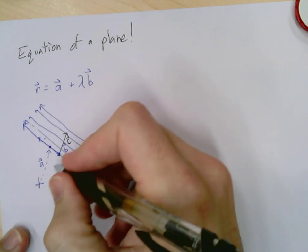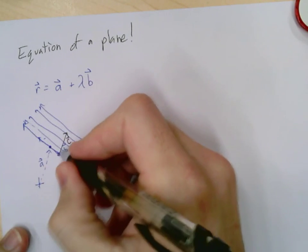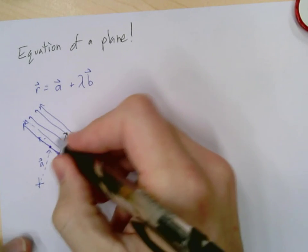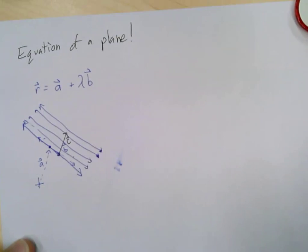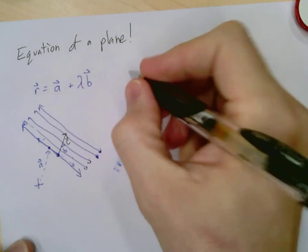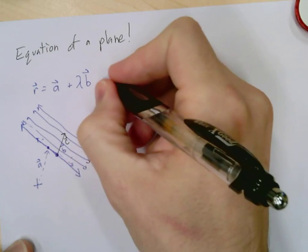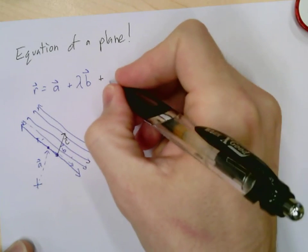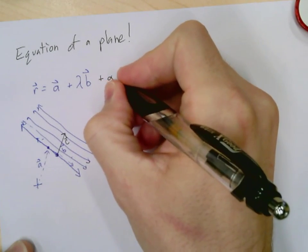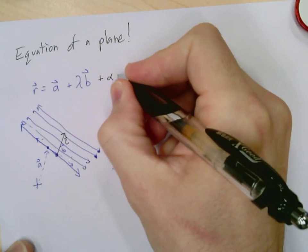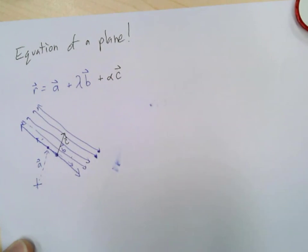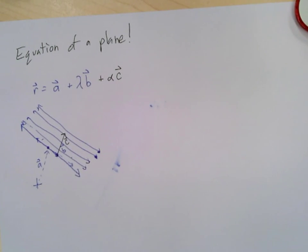I can only get to points that can be reached through these three vectors. So the equation of a plane is actually going to be quite simple—it's going to be very similar to what we had, but now I need one more parameter and one more vector. And that's the equation of a plane.